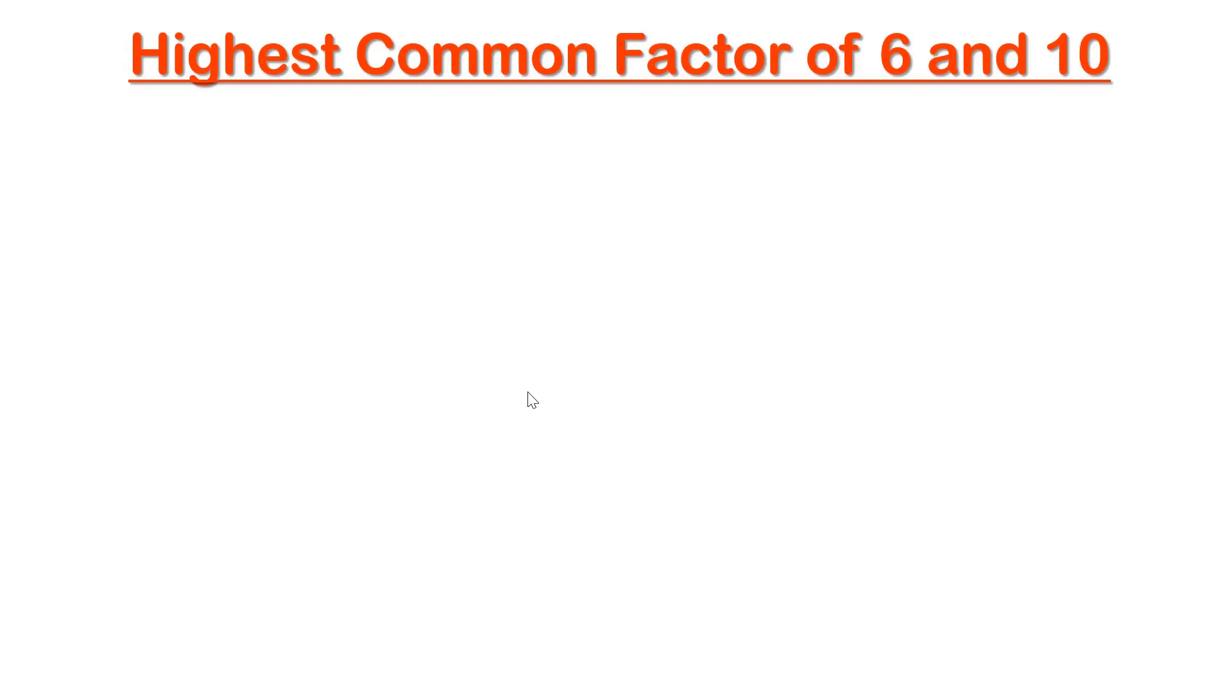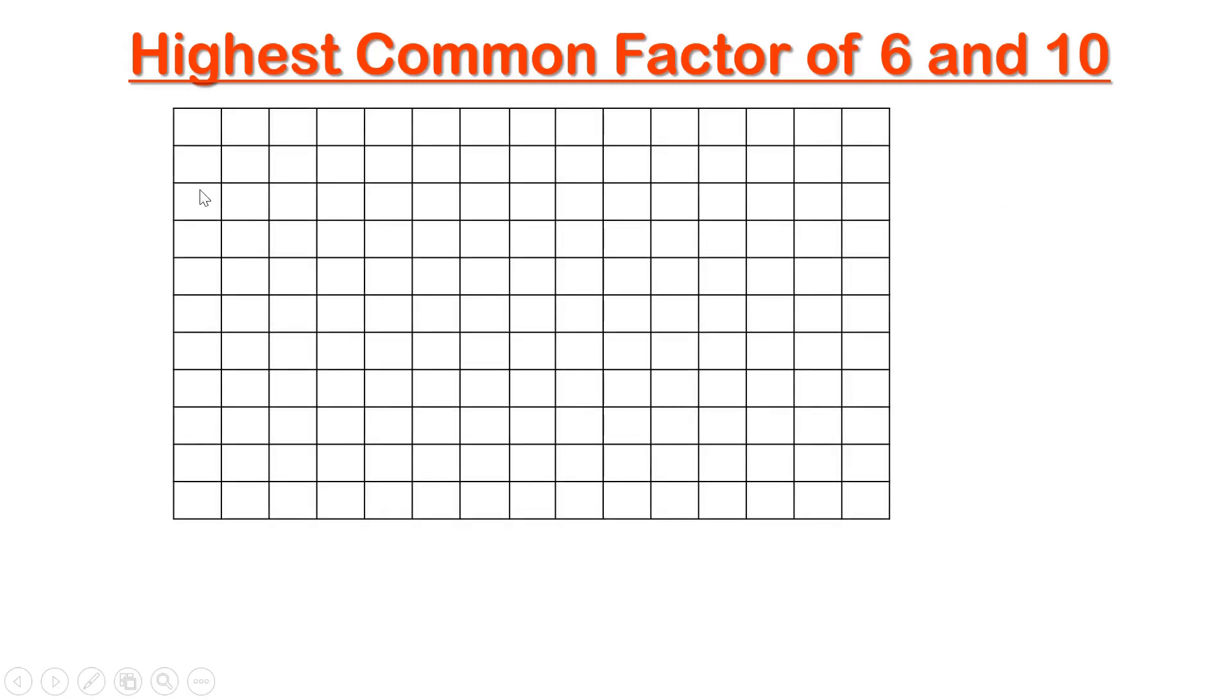As you know, in this we have two numbers, that is 6 and 10. To find the highest common factor of these two numbers, we need a square paper like this. This square paper is of 10 by 15, which means 10 rows I took like this and then I took 15 columns.